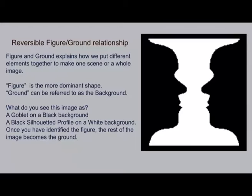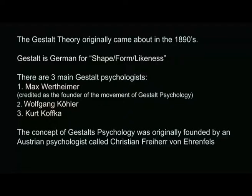In the figure-ground relationship we often find a possibility of reversibility. Figure and ground explains how we put different elements together to make one scene or a whole image. The figure is usually the more dominant shape whereas the ground is the background. In this diagram you can see either a goblet on a black background or a black silhouetted profile on a white background — it all depends on what you want to see and where you want to focus. Once you have identified the figure, the rest of the image becomes the ground.